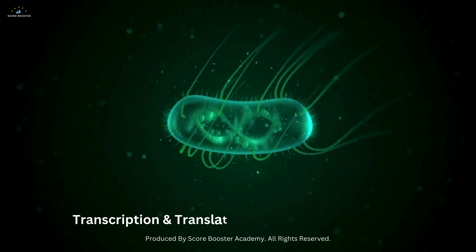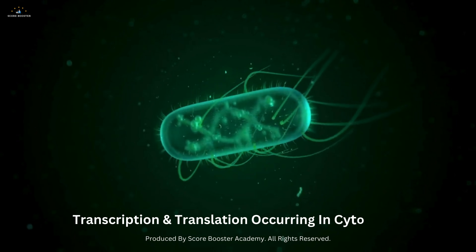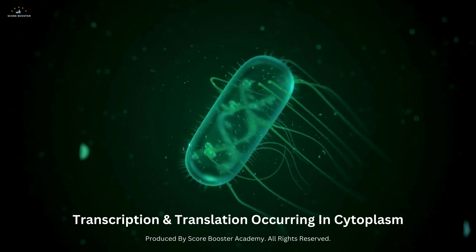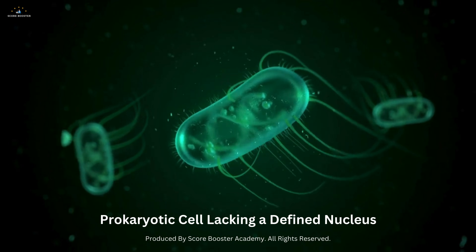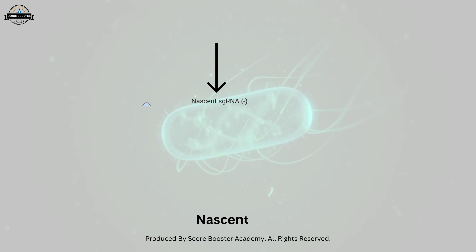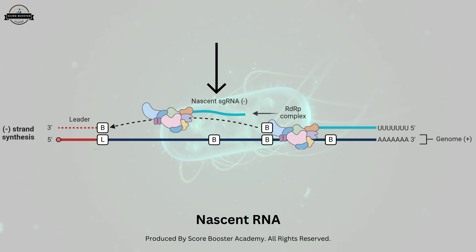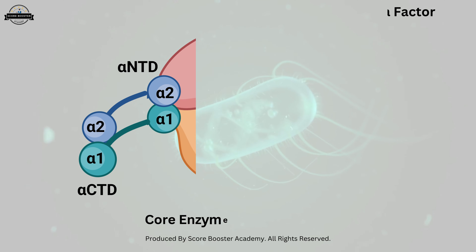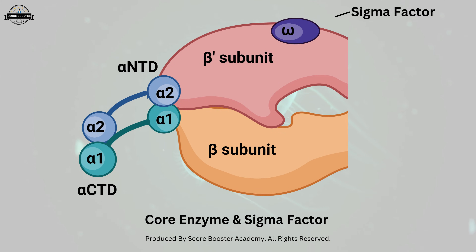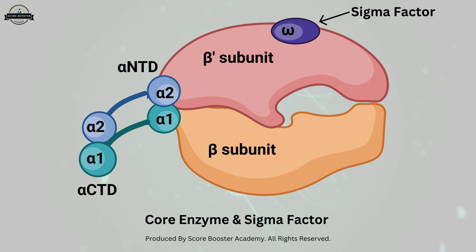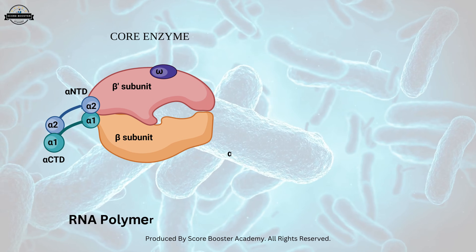In prokaryotes, transcription and translation occur simultaneously in the cytoplasm. This coupling is possible because prokaryotic cells lack a defined nucleus. Ribosomes can attach to the nascent RNA transcript and begin protein synthesis even before transcription is complete. The RNA polymerase in prokaryotes is relatively simple, consisting of a core enzyme and a sigma factor that initiates transcription. An example of prokaryotic transcription can be seen in the bacterium E. coli.